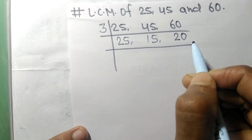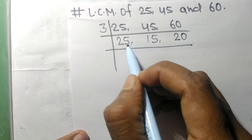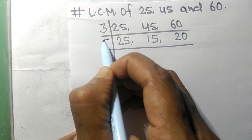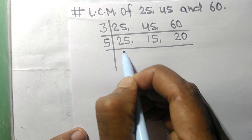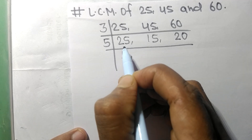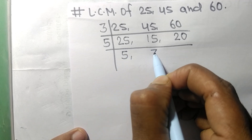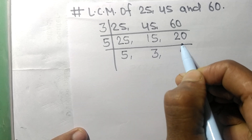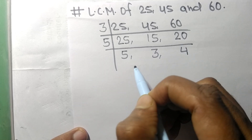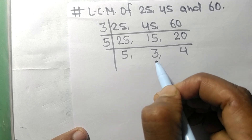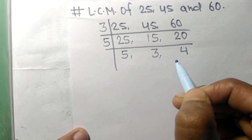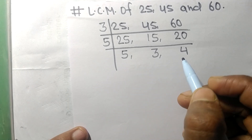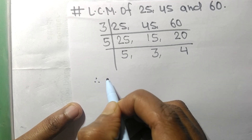Now all the remaining numbers are exactly divisible by 5. So 5 times 5 equals 25, 5 times 3 equals 15, and 5 times 4 equals 20. Now 5, 3, and 4 are not exactly divisible by the same number.